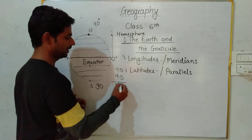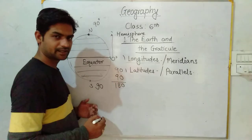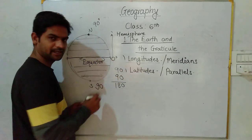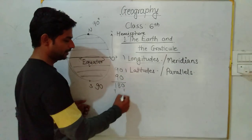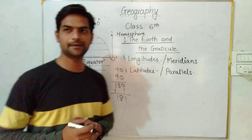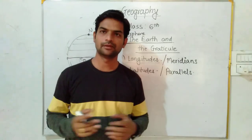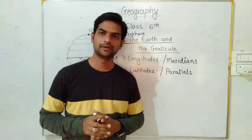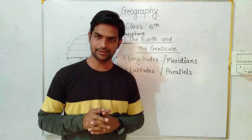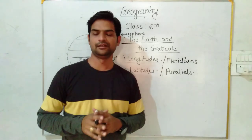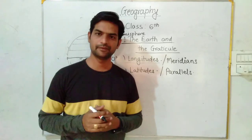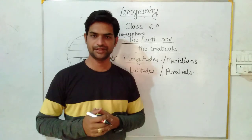We will calculate the number of parallels from both sides: 90 plus 90 equals 180. But this is not the correct answer — we are forgetting to count the equator. So add 1; the total number of parallels is 181. I hope you all understood about the longitudes and latitudes. For today, this much only. Remaining information and topics we will discuss in the next session. Thank you.